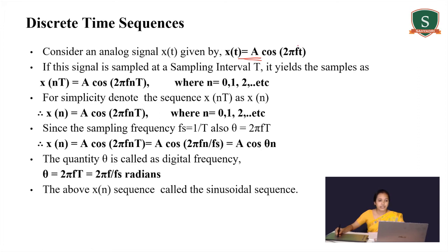Here f is the frequency of the signal x(t). If that signal is sampled at a sampling interval capital T, where T is known as the sampling rate, we get a discrete time sequence x(nT), whose expression is A cos(2πfnT), where T is the sampling interval, f is the frequency, and n is the variable whose value changes from 0, 1, 2, and so on.